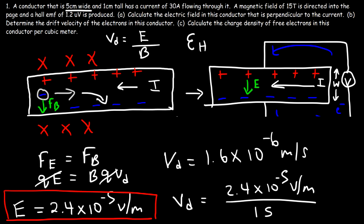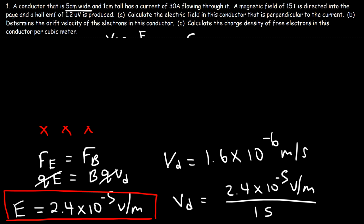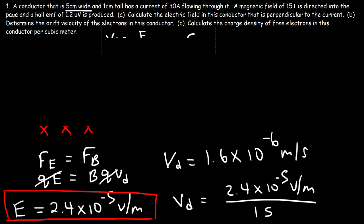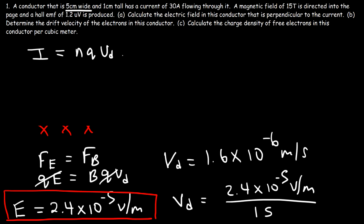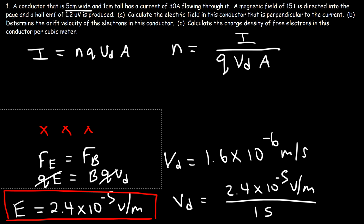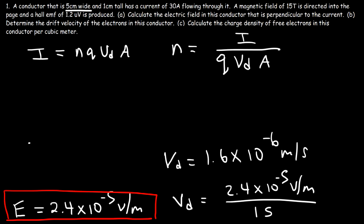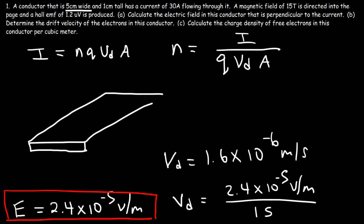Now let's calculate the charge density of free electrons in this conductor per cubic meter. The current is equal to NQv_d times A, where N is the charge density — the number of free electrons per cubic meter. We solve for N: it's the current divided by the charge of an electron times the drift speed times the cross-sectional area through which the current flows. Let's draw a side view of the conductor to clarify the cross-sectional area.